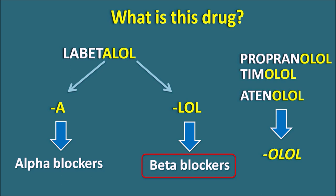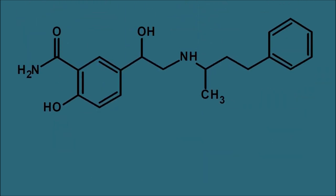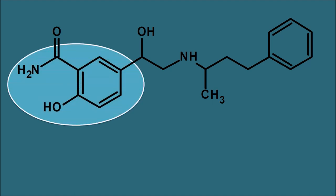Let us look at the structure of Labetalol. Since it is both a beta blocker and an alpha blocker, its structure has some similarity to the catecholamines, which have a catechol moiety attached to a beta-hydroxyethylamine. In Labetalol, this catechol moiety is somewhat modified: the OH group is replaced by a C-O-NH2 amide group, making it a salicylamide — a salicylic acid derivative where the carboxylic acid is converted to an amide.